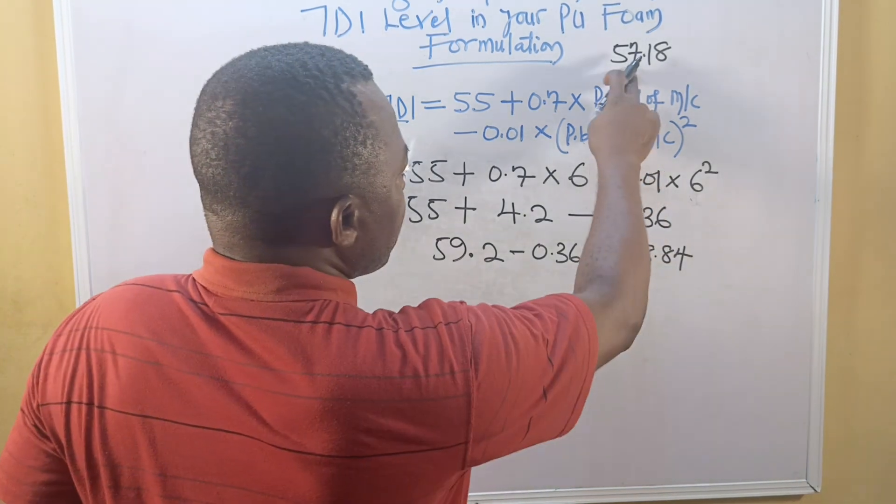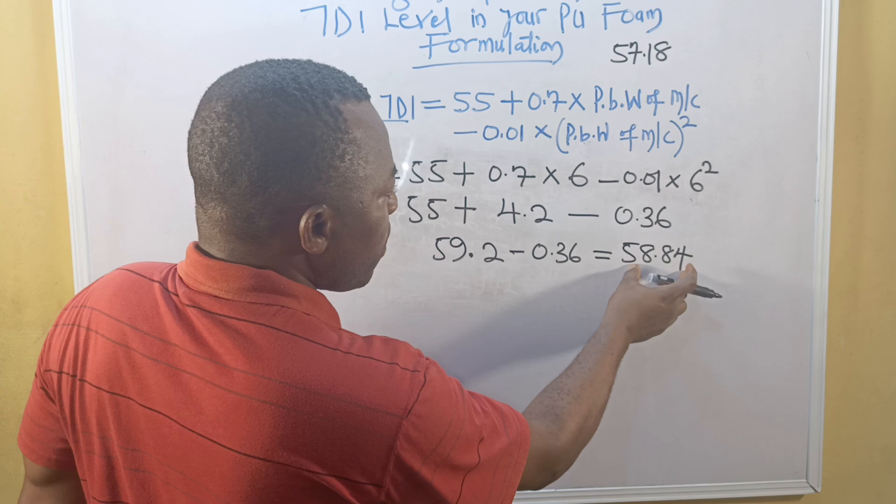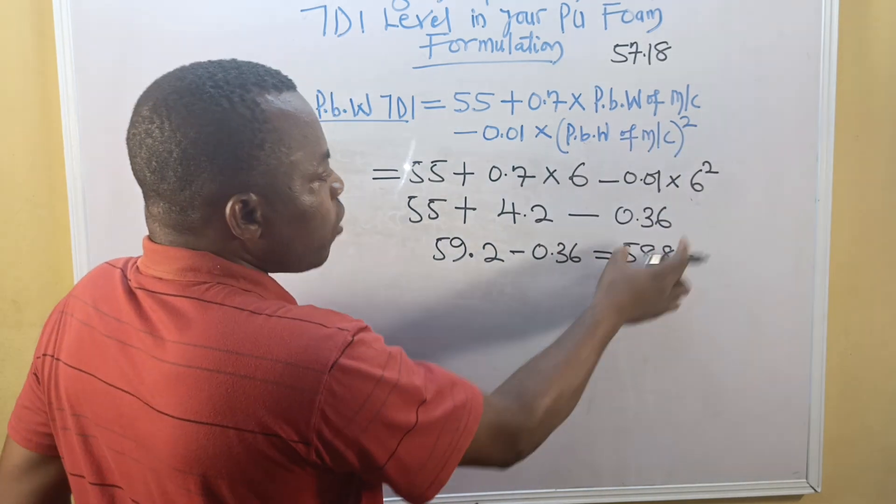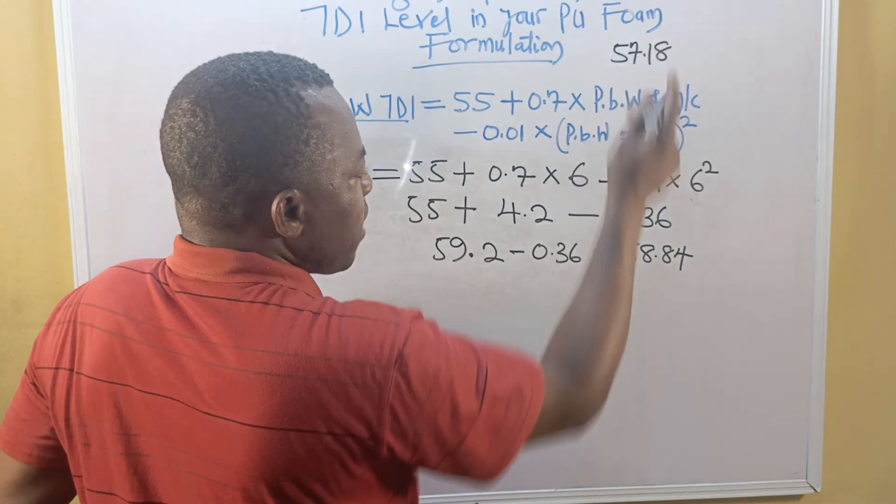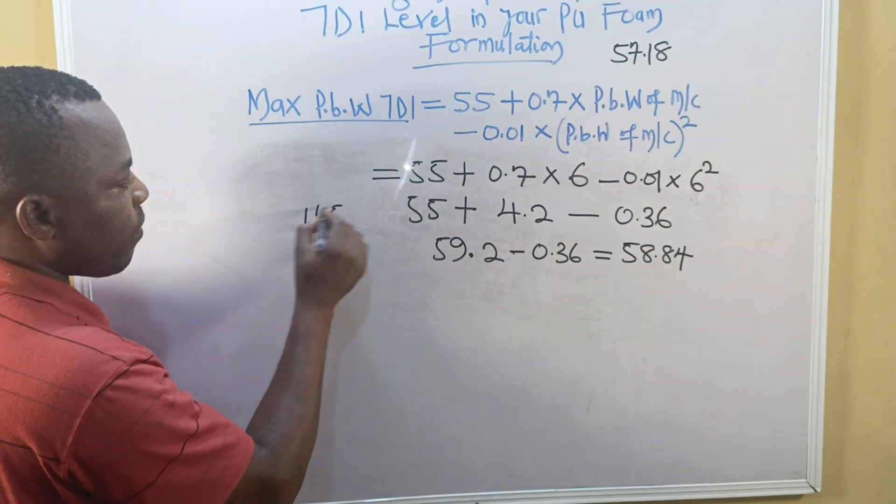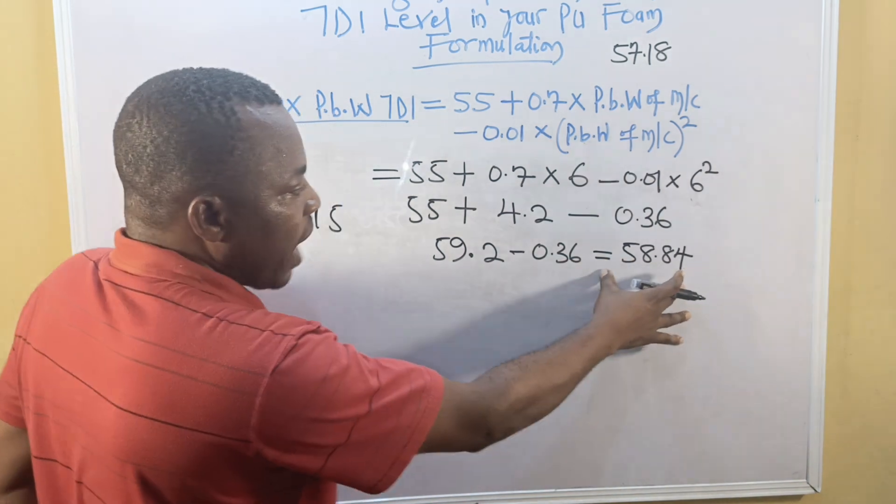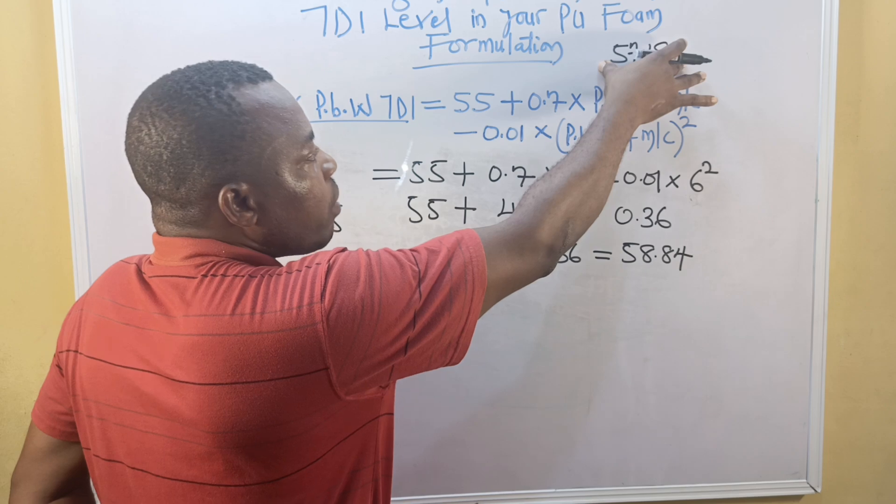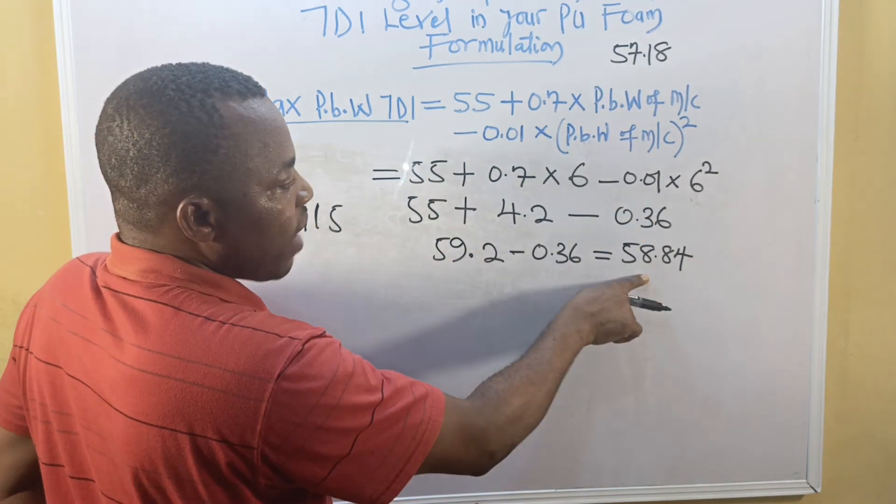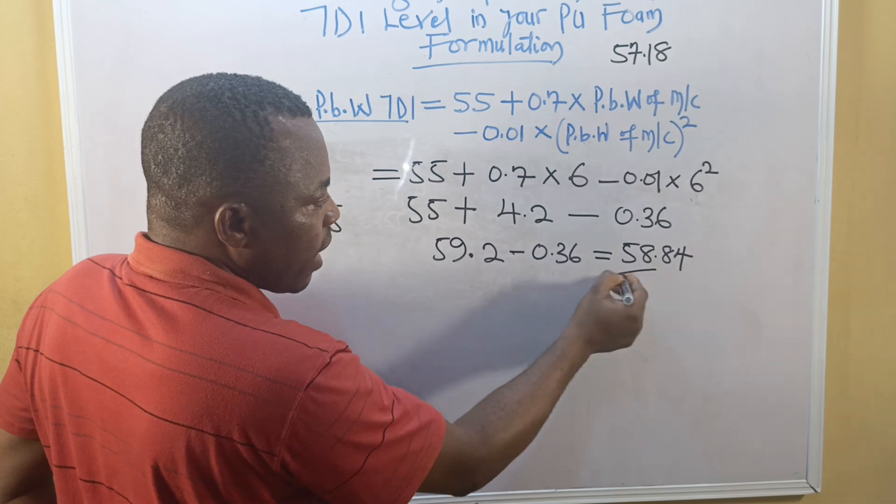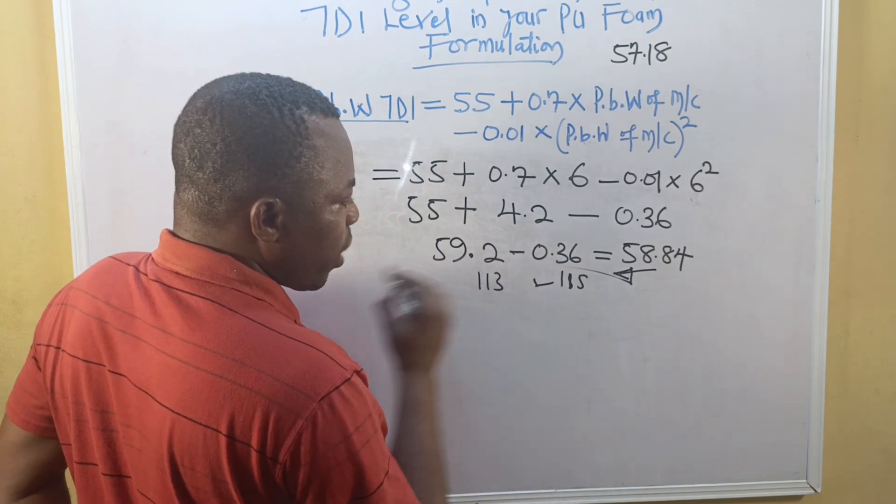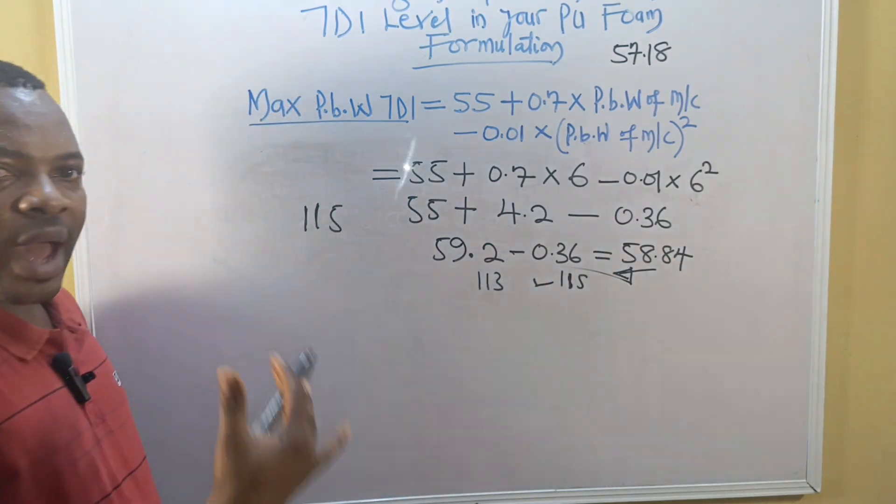Looking at this, our calculated value of 57.18 is actually lower than the maximum of 58.84. For the formulation to be safe, your measured value must be less than the calculated maximum. If it were higher, you would need to adjust your index downward, by reducing it from 115 to perhaps 113. This adjustment will affect the hardness of your foam.